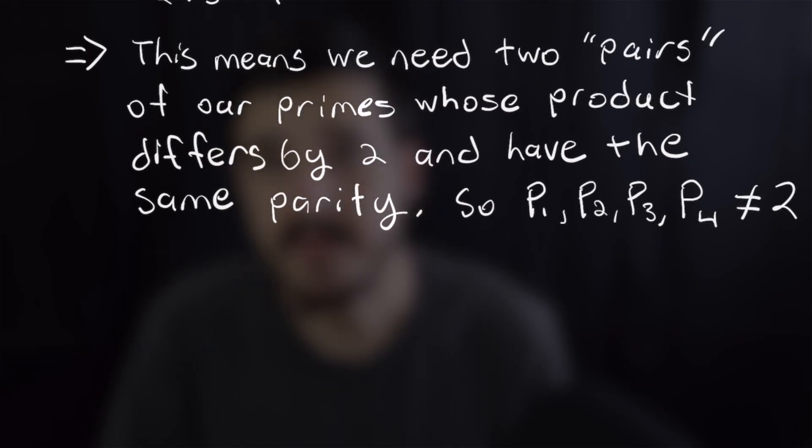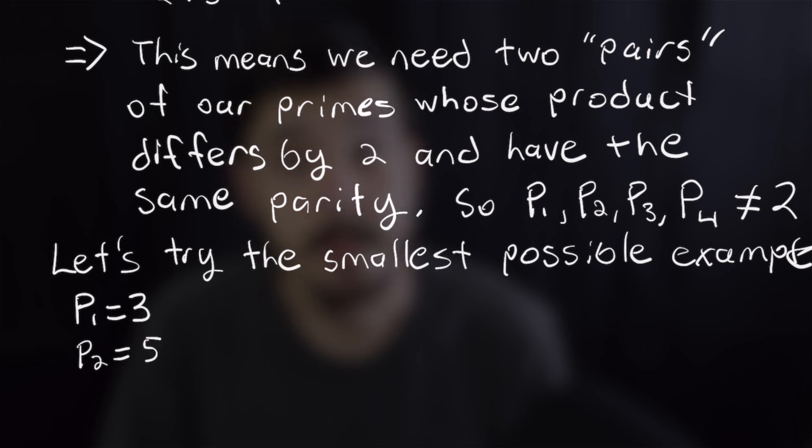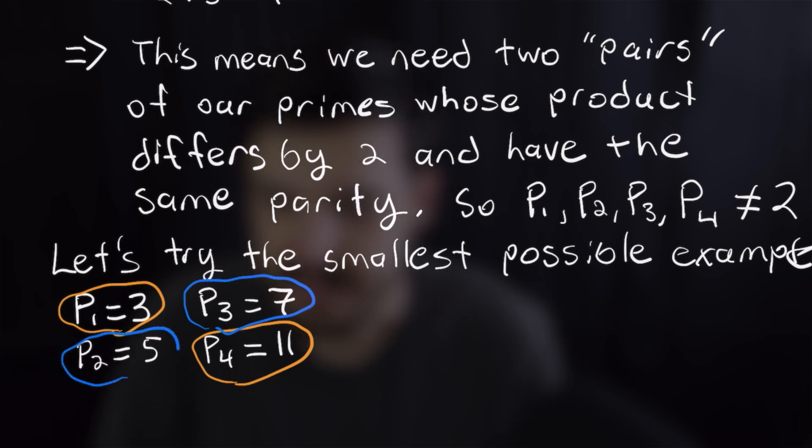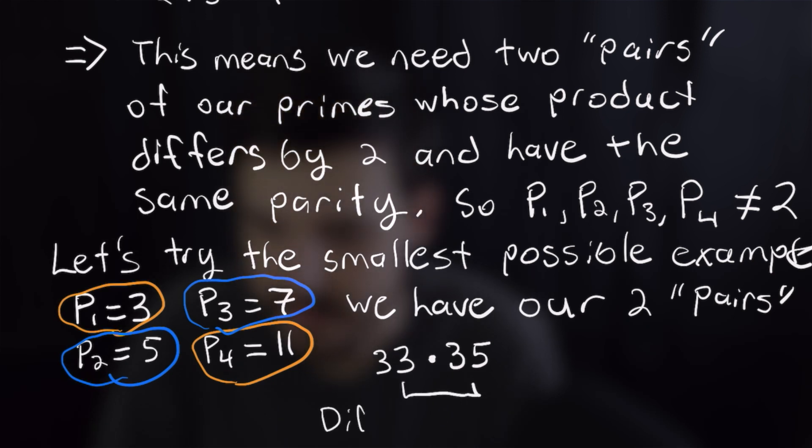So with that out of the way let's try our smallest example which would be the first four odd primes those being three, five, seven, and eleven. Well we can see we actually can group those in a way where the difference is two. We can group them as three times eleven and seven times five and thirty three is two less than thirty five. Now what we need to do is check and see if that satisfies our requirement.